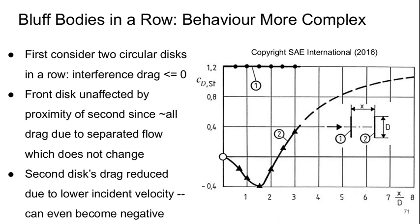The front disc is essentially unaffected by the proximity of the second one. Since all of the drag there is due to separated flow, which just doesn't change depending on how close the second one is. So we see that the separation distance here has no impact on the drag of body one.